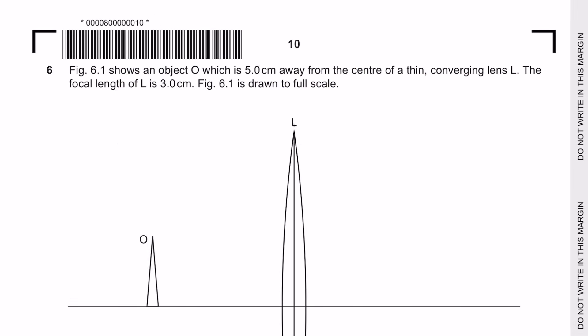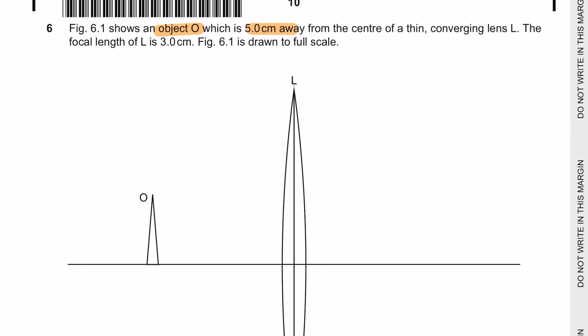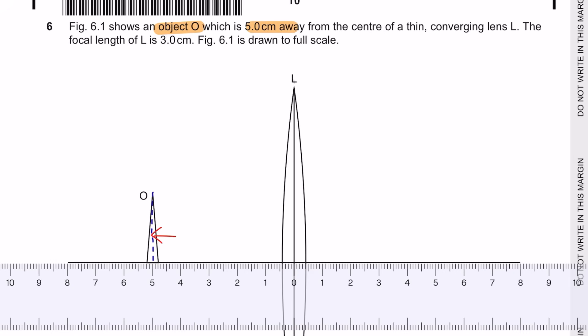Question 6 is from chapter 3 V. Figure 6.1 shows an object O which is 5 cm away from the center of a thin converging lens. So the distance of the object to the center of the lens is 5 cm. And the focal length is 3 cm.